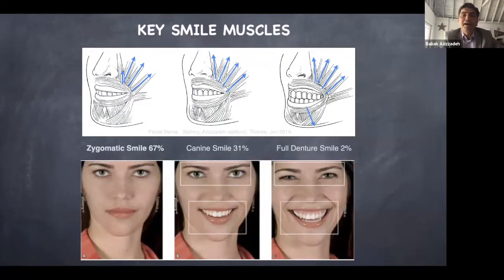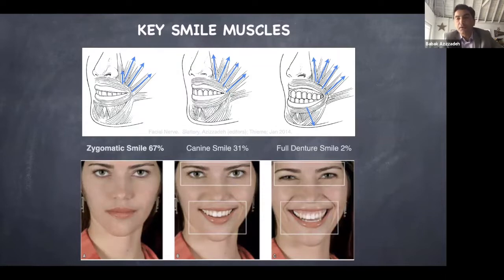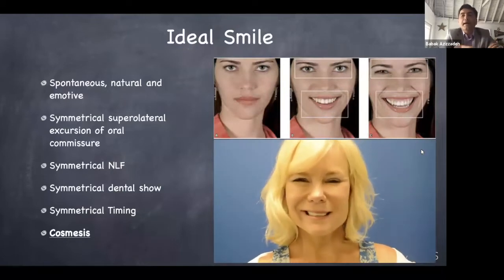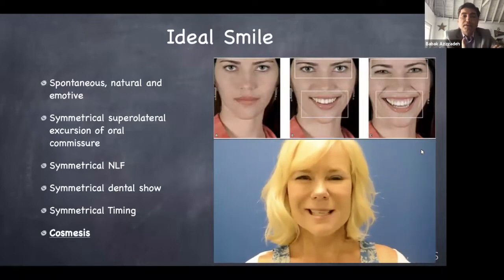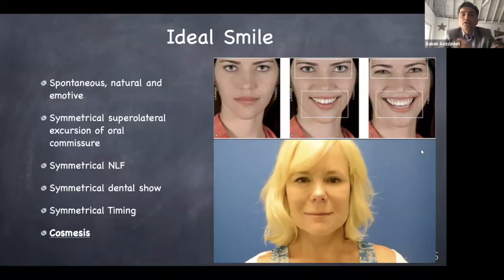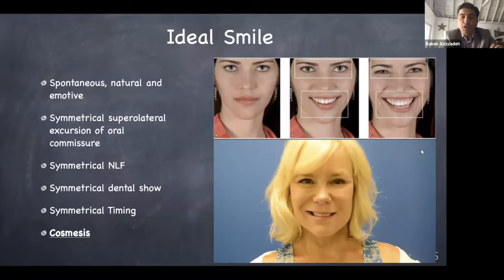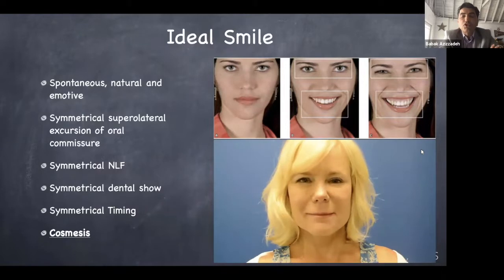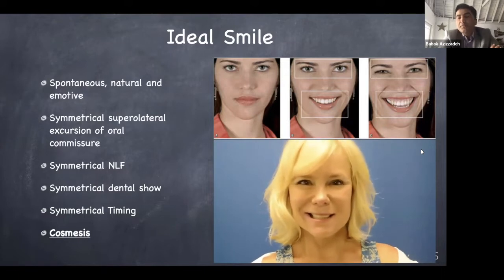When we smile big, five key muscles are very important and activated. These are called the levator muscles, the zygomatic muscles, and the depressor labii inferioris — that's bringing the lower lip down. What we want in an ideal smile is spontaneous, natural, and emotive. We want the corner of the mouth to move symmetrically up, symmetrical laugh line, symmetrical teeth show, symmetrical timing, and we want it to be cosmetic.